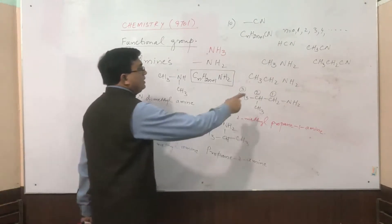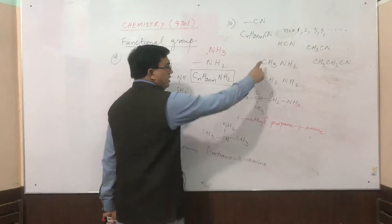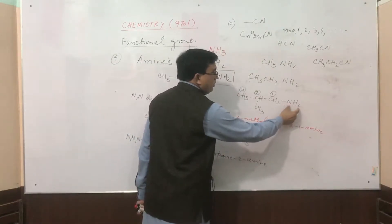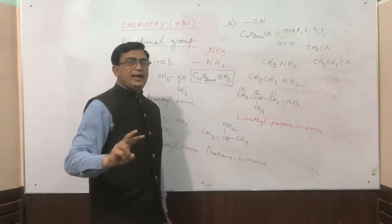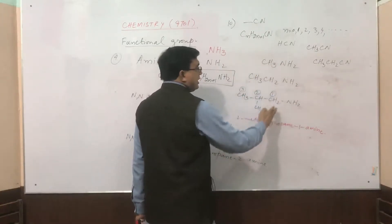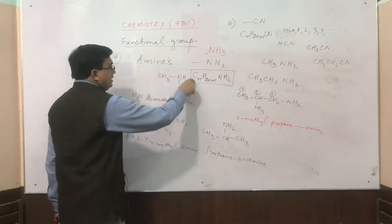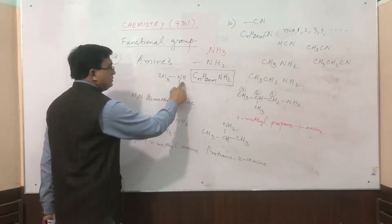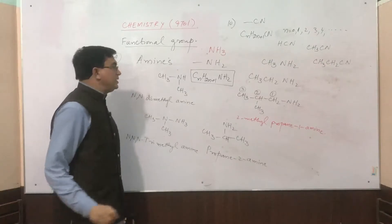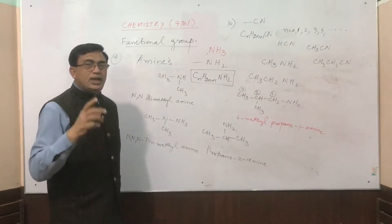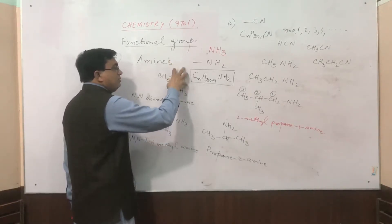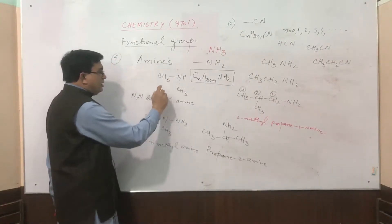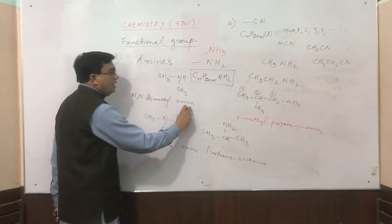Similarly, all these amines are primary amines. Those amines in which the functional group contains 2 hydrogen atoms are called primary amines. Now in this formula, there is only one hydrogen present with the functional group. It means that 2 alkyl groups are directly attached to the nitrogen atom. That's why this will be an example of secondary amines, and this will be named as dimethylamine.